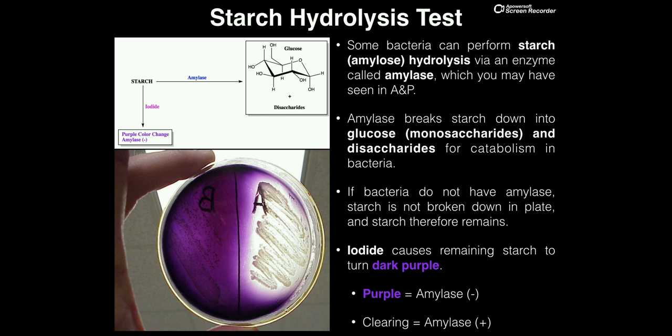The starch hydrolysis test is a simple test involving an enzyme that many of you have probably seen in the context of anatomy and physiology, and it gives a pretty straightforward result. If you see a clearing after you add the iodide, you have an amylase positive species. Whereas if the whole side of a petri dish is purple, the bacteria do not produce amylase and therefore you have an amylase negative species.